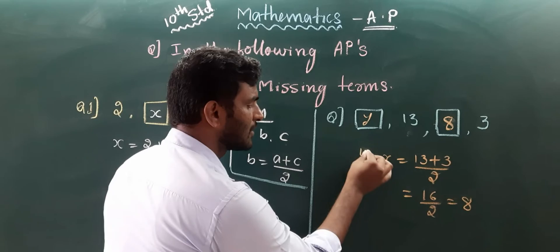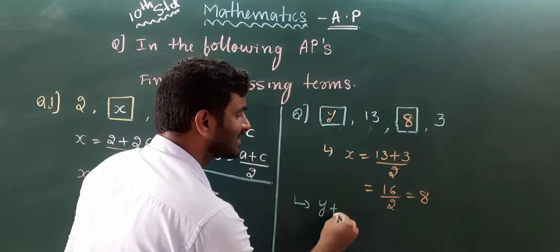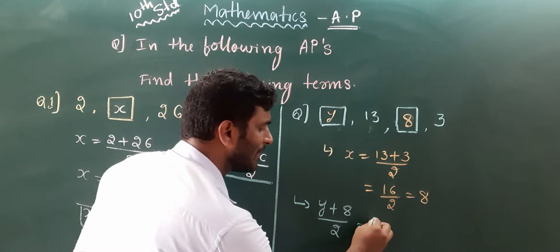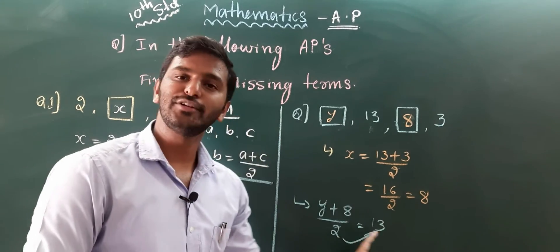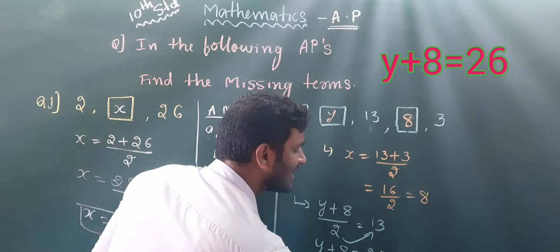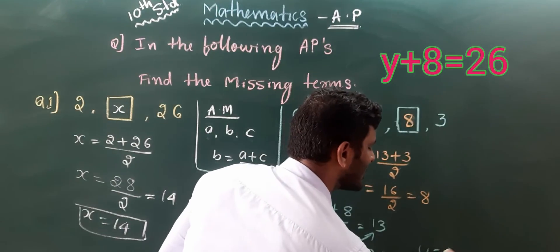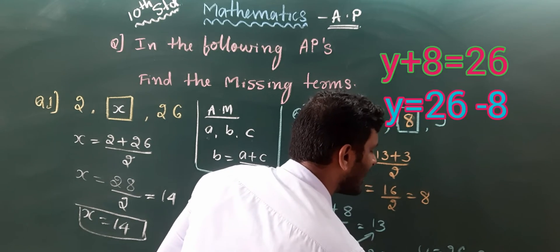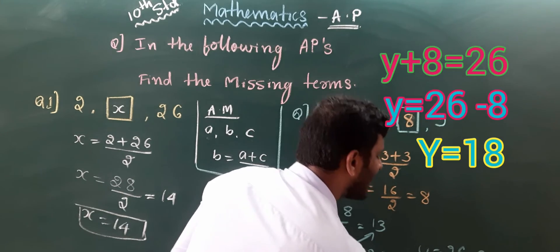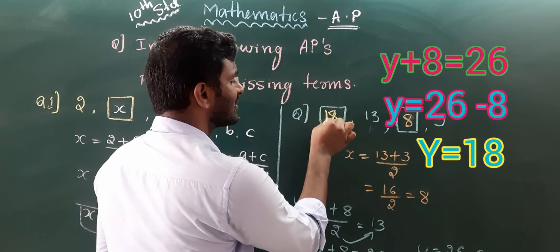To find y, we use the arithmetic mean of the first and third terms: y plus 8 divided by 2 equals the middle term 13. Cross multiplying: y plus 8 equals 26, so y equals 26 minus 8, which gives y equals 18. Therefore the first term is 18.